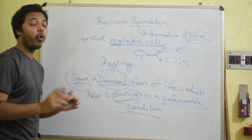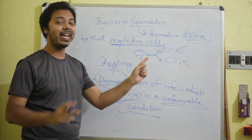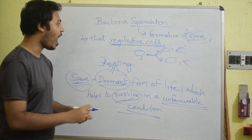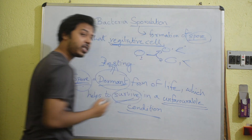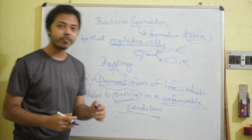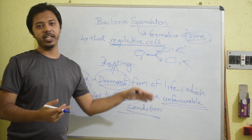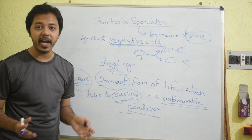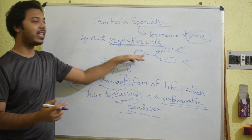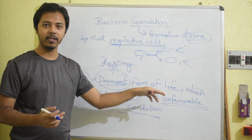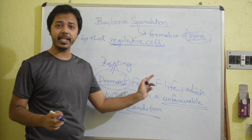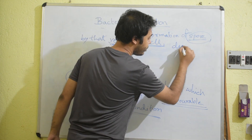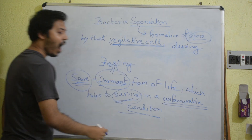But when that vegetative cell produces a spore, after that the cell will not divide — division will stop. After the formation of the spore, that vegetative cell will transfer to its non-vegetative condition, because after the formation of the spore it will not divide again. So sporulation is the formation of a spore by that vegetative cell during unfavorable conditions.